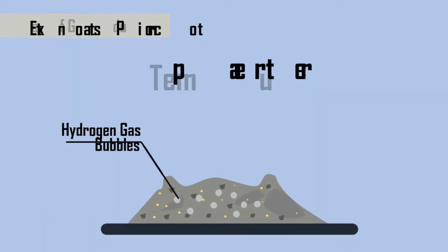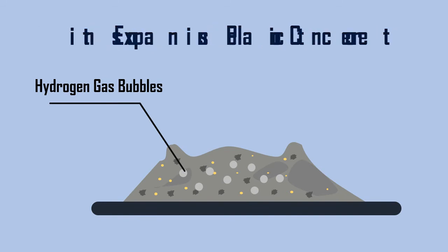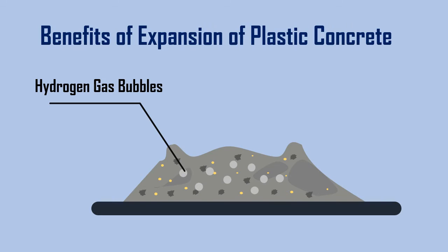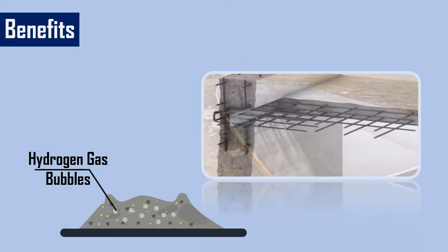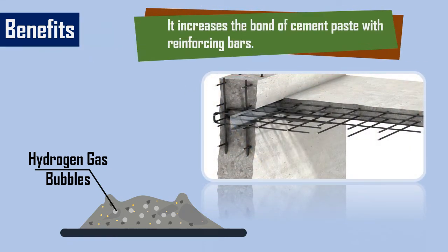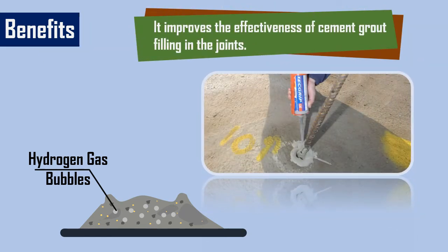The properly controlled action of this admixture causes slight expansion in plastic concrete or mortar. The expansion of plastic concrete has the following benefits: it reduces the settlement of concrete ingredients, it increases the bond of cement paste with reinforcing bars, and it improves the effectiveness of cement grout filling in the joints.